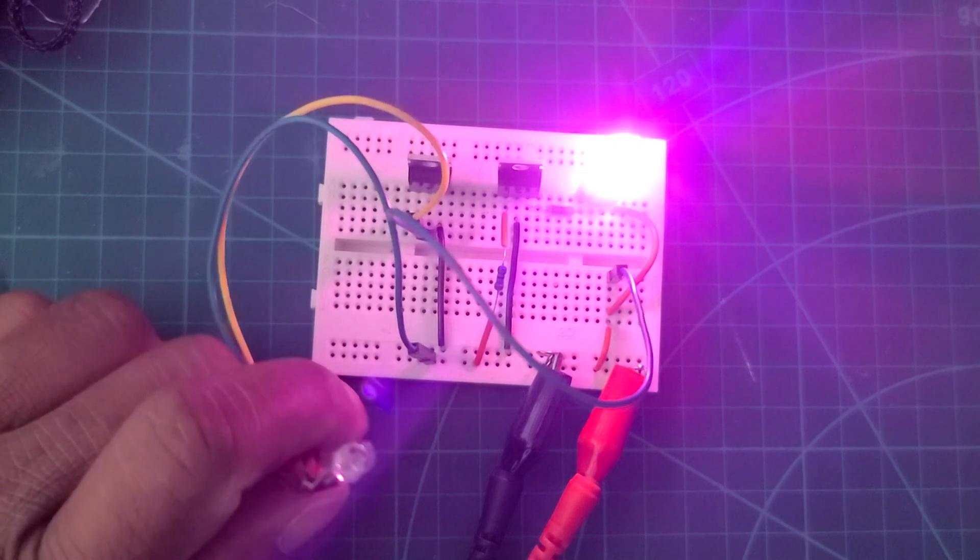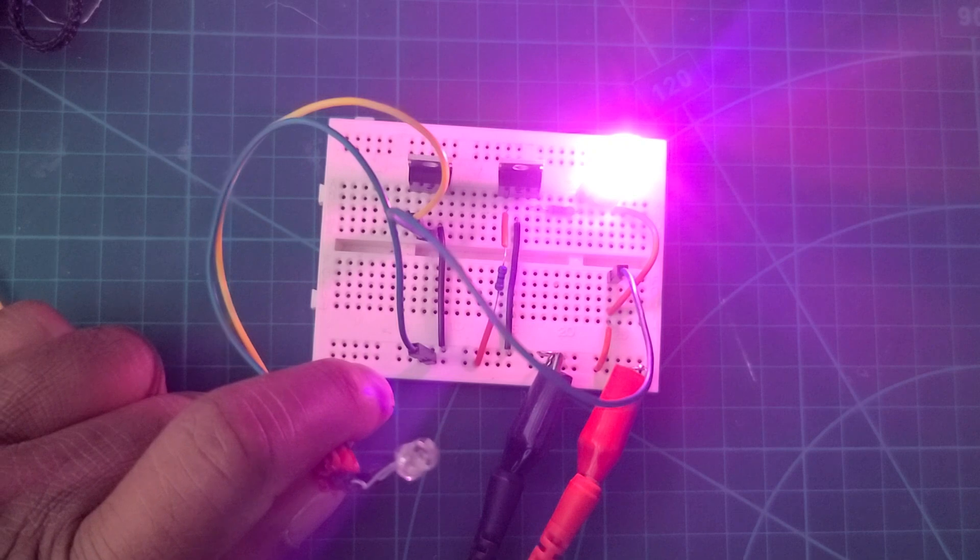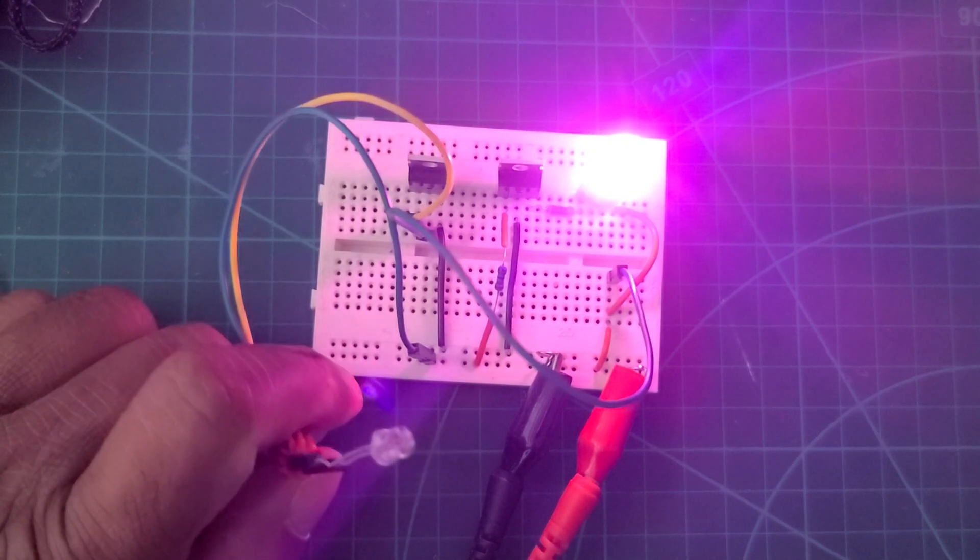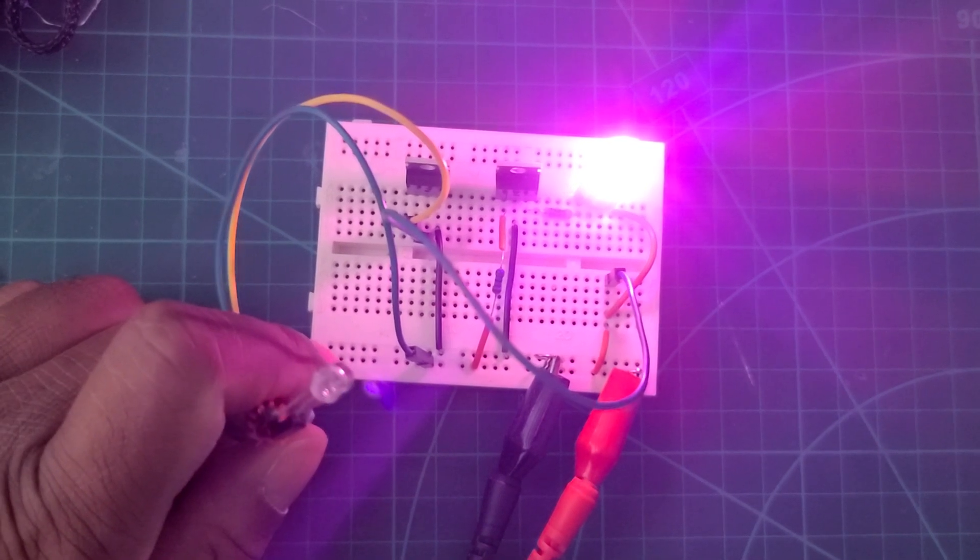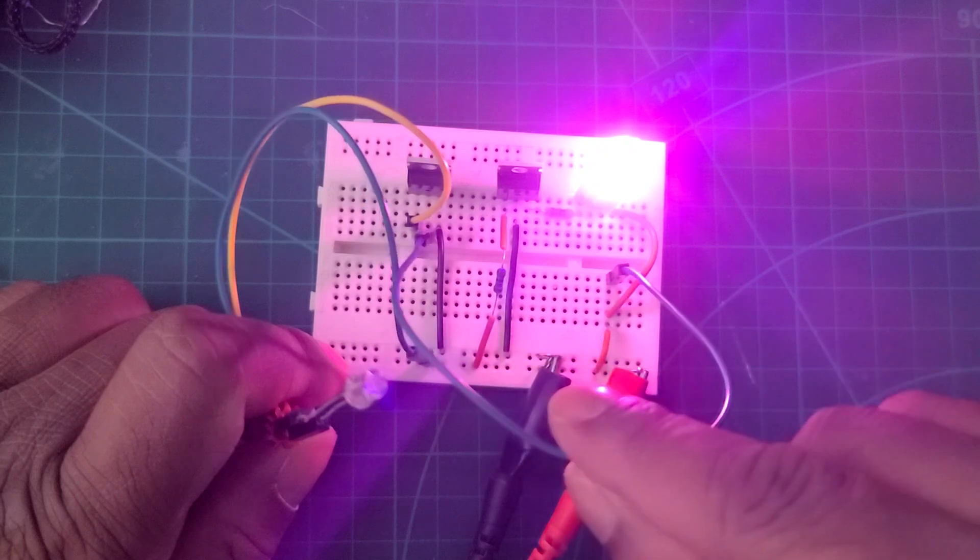This light dependent resistor, if you shed some light, it reduces its resistance. This is the way the connection will be established. You can see at the moment the whole circuit is connected.